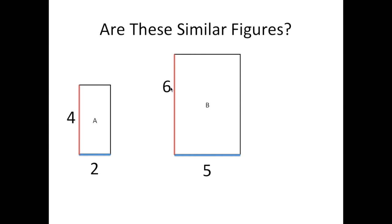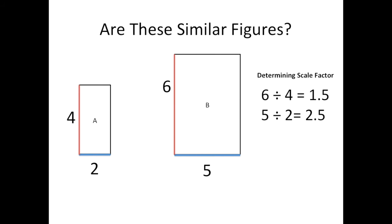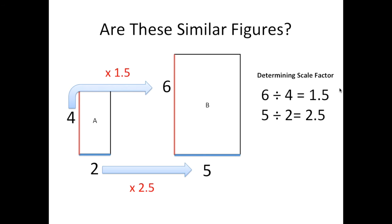You take the bigger side length, six, and divide it by four; then take five and divide it by two. This gives you the scale factor from the small rectangle to the big one. If you want the scale factor from big to small, you just take the reciprocal — four divided by six instead of six divided by four. So: six divided by four is 1.5, and five divided by two is 2.5. These numbers are different, so there is no common scale factor and these would not be similar figures.